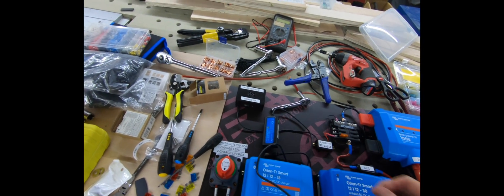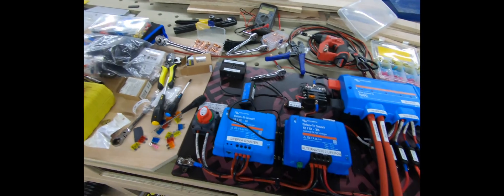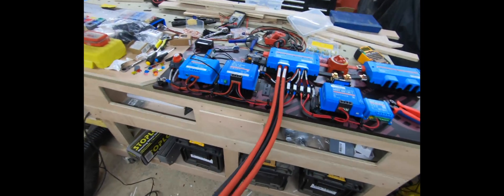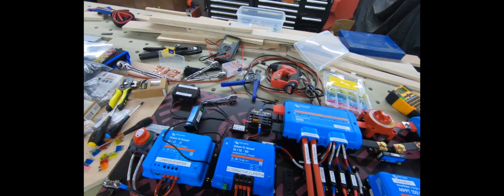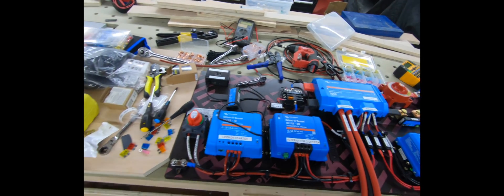We have a three kilowatt multi plus two and we've got a few other bits and pieces. With these 70 millimeter big old cables, they will go directly to the inverter so there should be very little voltage drop.